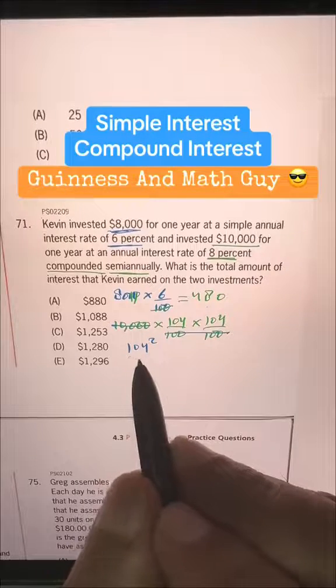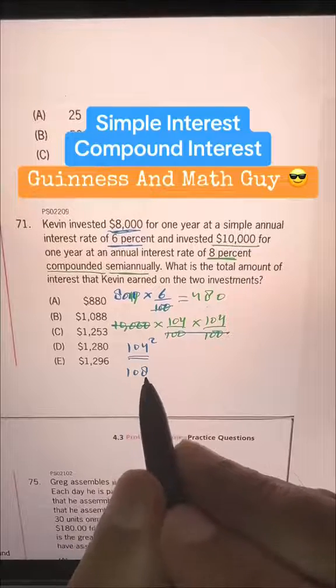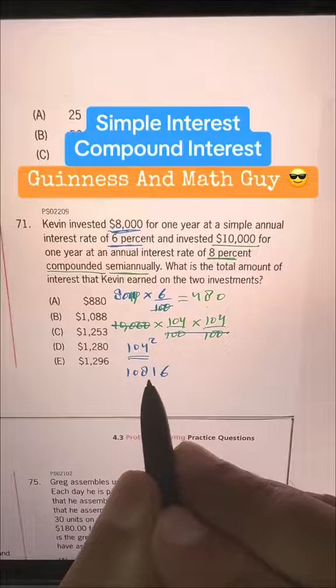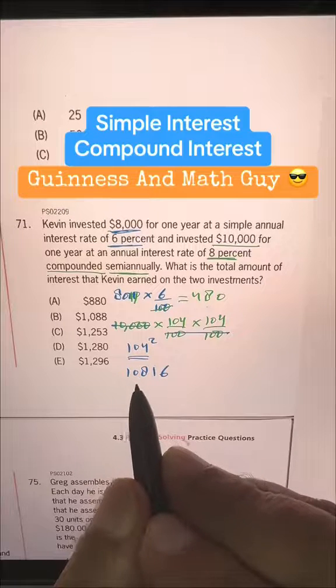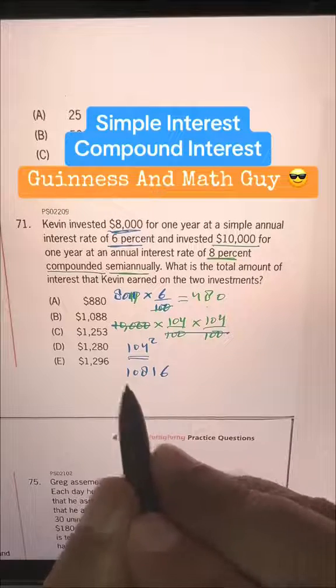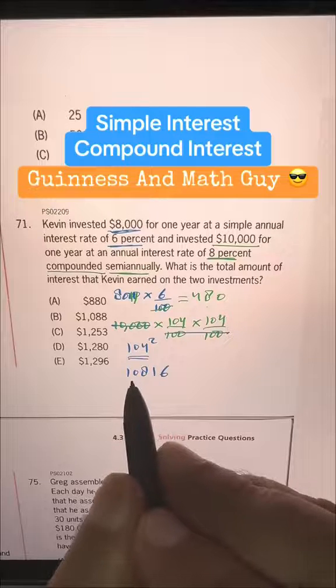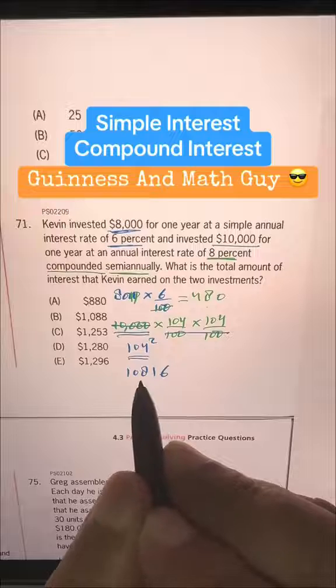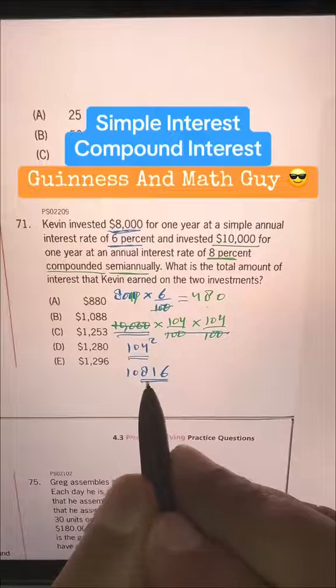So add 4 to 104. It will become 108. And write the square of 4, 100 and this, that's 6 into 10,816. That's the final answer. And we know the original investment was 10,000. So just the above is interest 816.